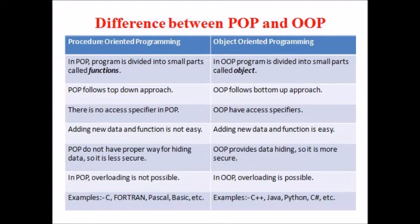POP does not have any access specifiers, whereas OOP has access specifiers like public, private, protected, etc. Since the data values are global in POP, adding a new function and data is not easy. Whereas adding data and functions in OOP is easy as the data values are not global. POP does not have a proper way of hiding data, so it is less secure, whereas OOP provides data hiding using access specifiers.